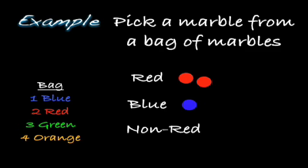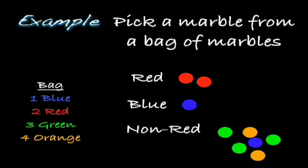We can define an event as picking a non-red marble. Notice: blue is not red, green is not red, and orange is not red, so all those marbles are not red. That includes the one blue, one orange, another orange, three green marbles, and four orange marbles in total. All of these marbles are not red.